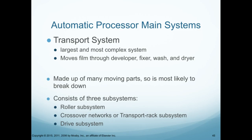The transport system is the largest and most complex system of the unit. It moves film through the developer, fixer, wash, and then to the dryer. It's made up of many moving parts, so it is most likely to break down. This used to be the rad tech's job to figure out what was wrong, but now that is left up to a third party that comes out and takes care of these things.